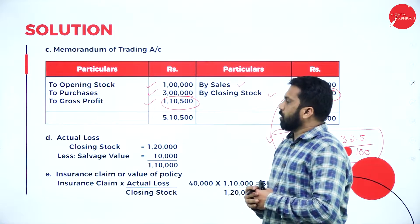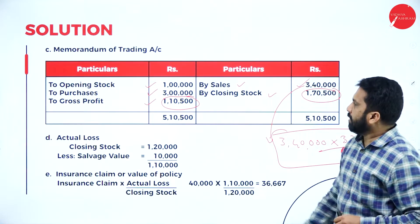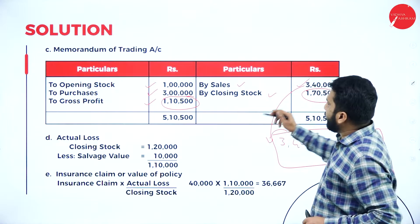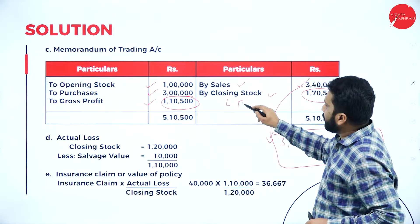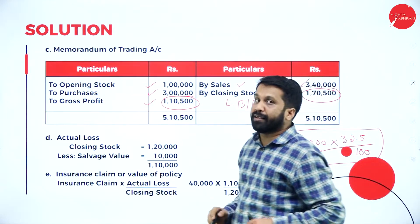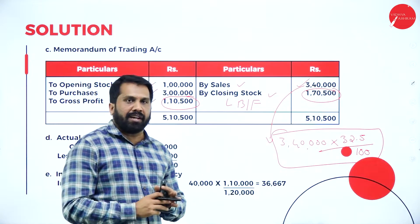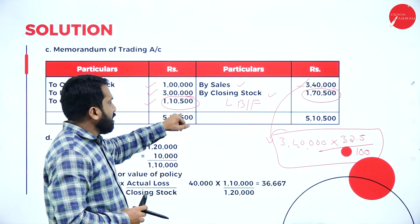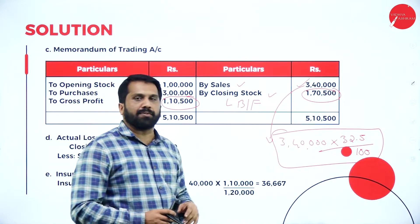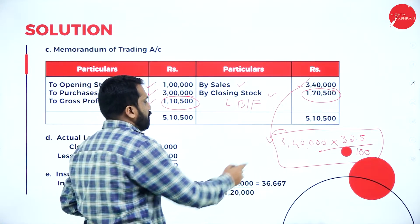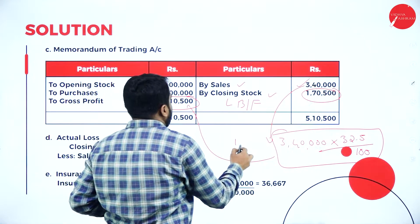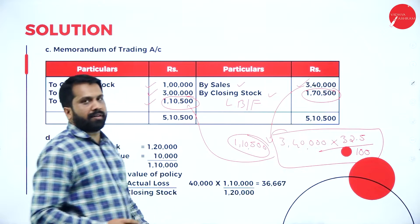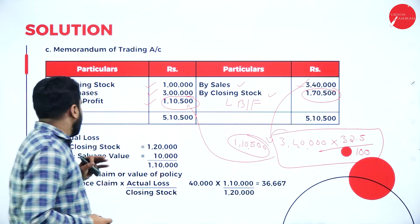Once you are done with the gross profit, you have to find the closing stock. Add everything up — the total is 5 lakh 10. This closing stock is the balancing figure, so don't scratch your head. The closing stock equals the total minus the other items. Doing this calculation gives you 1 lakh 70,500.